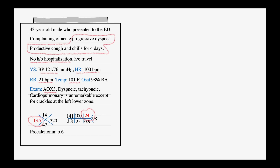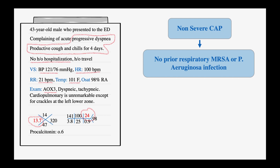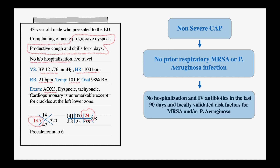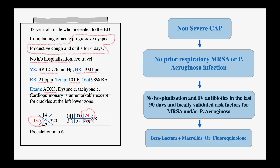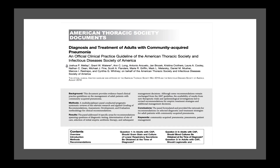To summarize our patient: he has symptomatic community-acquired pneumonia, no prior hospitalization or IV antibiotic use, is hemodynamically stable, and does not qualify for severe CAP. He has non-severe community-acquired pneumonia, no prior respiratory MRSA or pseudomonas infection, and no prior IV antibiotics. Therefore, we should treat him with beta-lactam plus macrolides or fluoroquinolones alone, without obtaining cultures or adding MRSA or pseudomonas coverage. Thank you for listening. Please review the guidelines after watching this video.